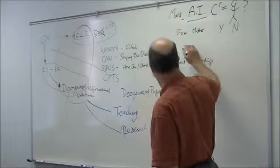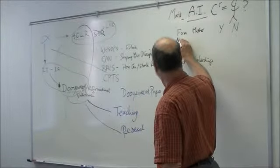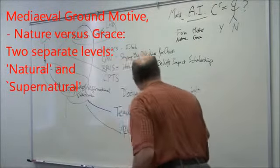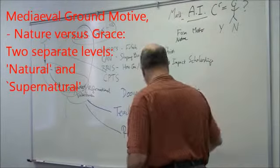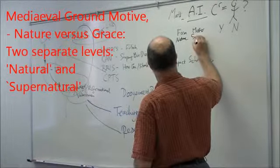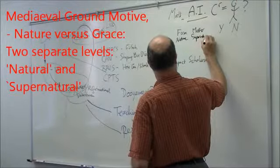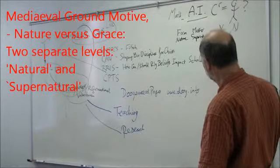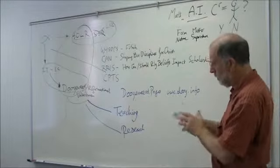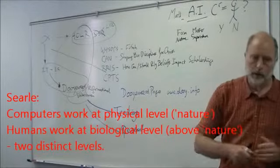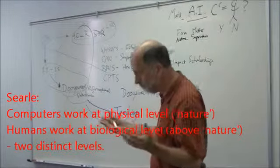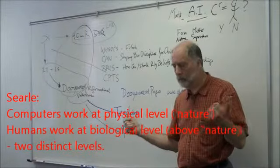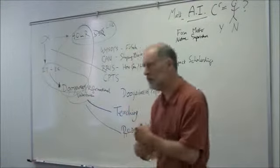Then there are some, including John Searle, who take the nature grace ground motive, or as I prefer to call it, the nature supernature ground motive. That is, there's two layers, supernature and nature. John Searle says, computers work by physical causality, humans work by mental, biological causality. And so they cannot be the same thing. What he means by biological causality, he doesn't actually say.